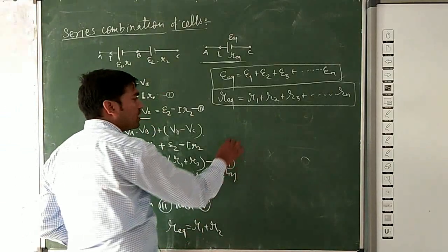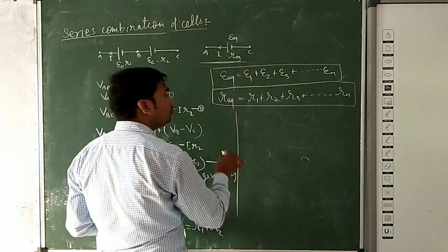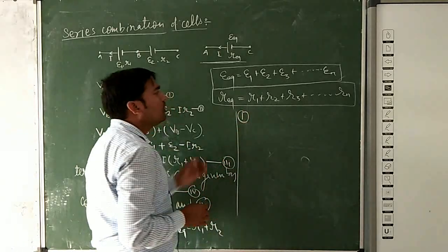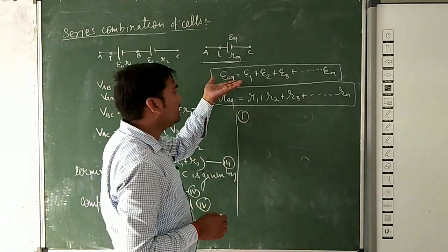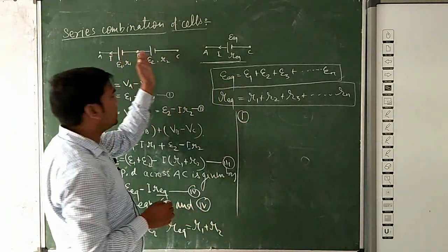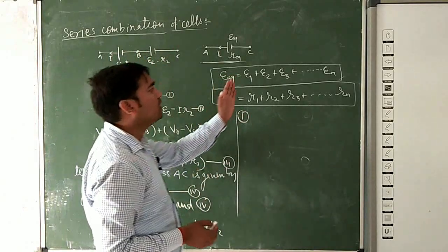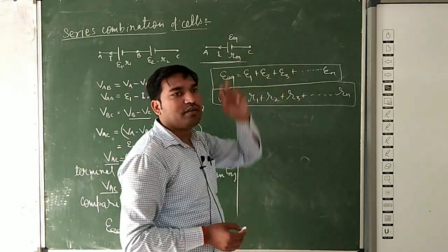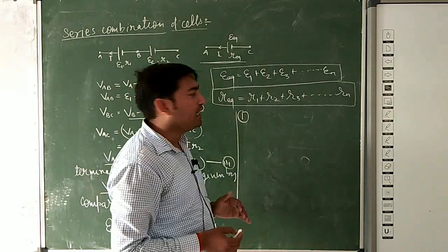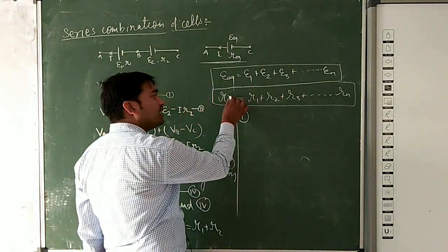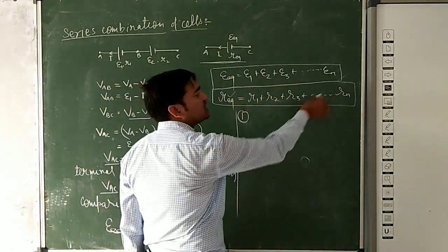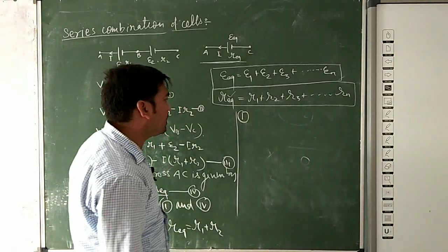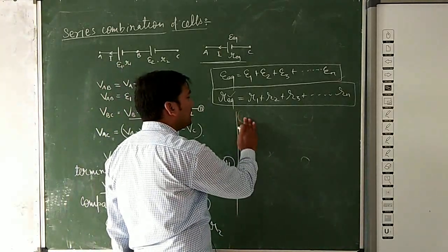So from this we get two rules. First rule: the equivalent EMF of cells connected in series equals the sum of individual EMFs. And the equivalent internal resistance equals the sum of individual internal resistances.